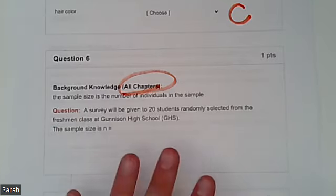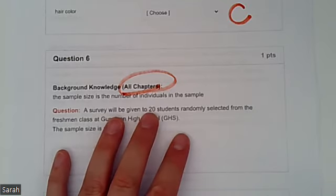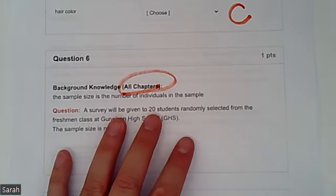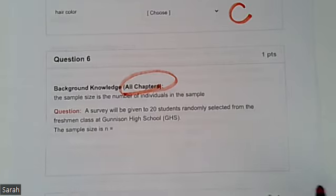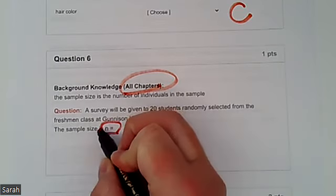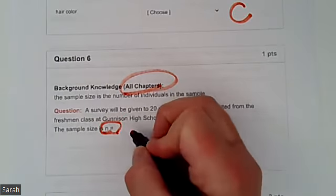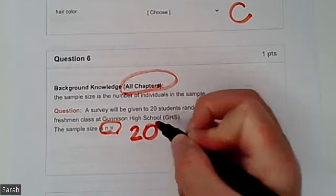That's the only information we have. So we're going to assume that all 20 of those students did, in fact, fill this survey out, since we don't know anything otherwise. And so that means my sample size, we represent that with a lowercase letter N. My sample size N is going to be equal to 20.